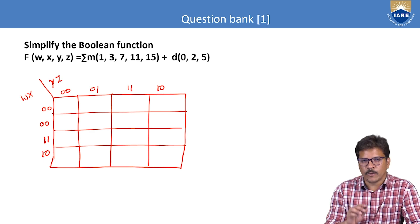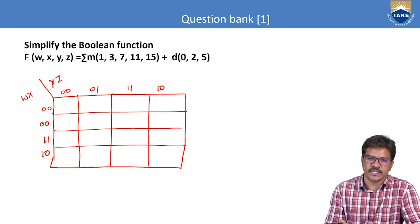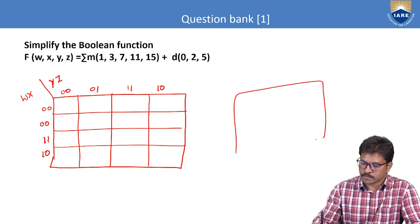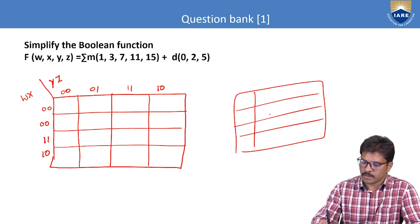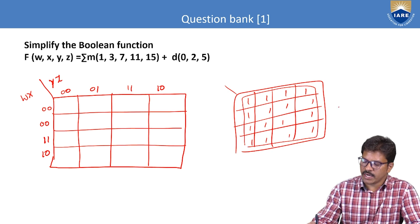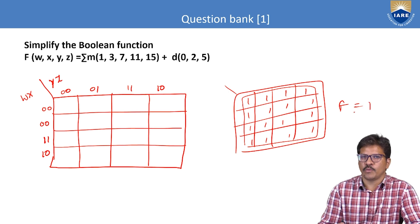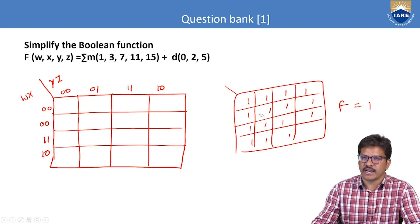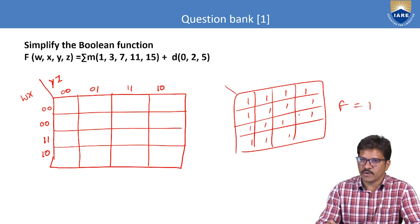What are the possibilities of grouping in the KMAP? We always start from the highest possibilities. The highest possibility is where all 16 cells are ones — if all are ones, we group them all and the Boolean function answer is 1. Suppose 15 ones are there, then there is a possibility to create a group of 8 ones. We find those 8 ones and group them.